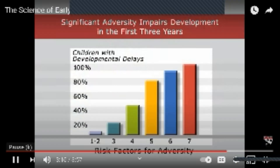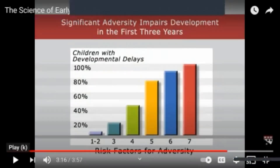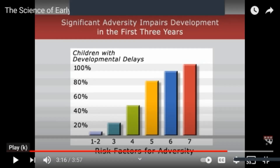Stress can affect the immune system. Having more risk factors in the first three years of life makes it much more likely that you'll have developmental delays. Even though in the first few years of life you haven't started any schooling, the risk factors — as they multiply — are going to cause delays throughout your childhood and beyond, and this will affect your schooling. It can also affect the cardiovascular system.